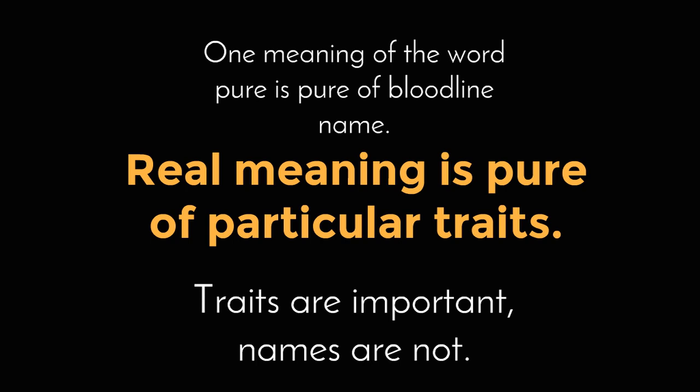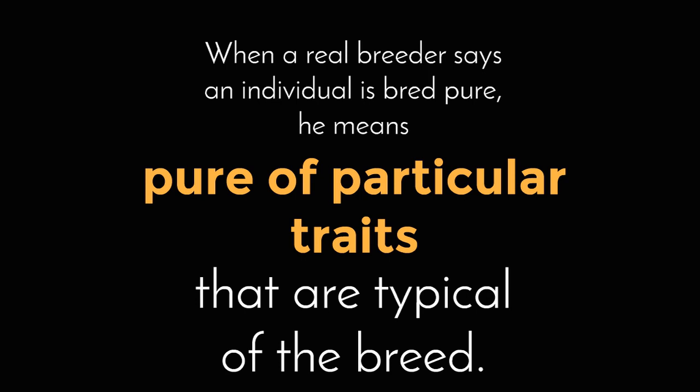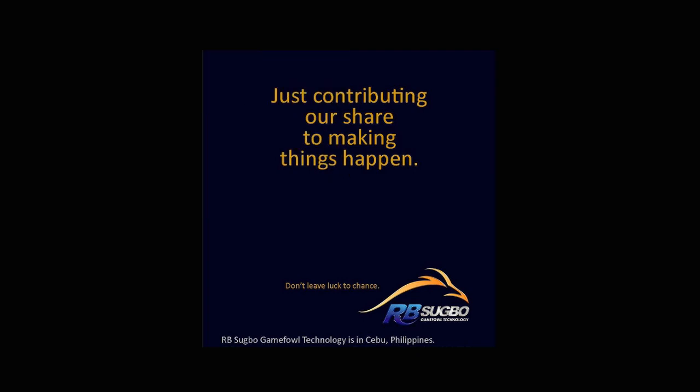In gamefowl breeding, the word 'pure' is often used to describe purity of bloodline, such as pure Possum Sweater or pure Sanford Yellow-Legged Hatch. One meaning of pure is pure of a bloodline. But there is another and better meaning of the word pure: pure of a trait or characteristic. In reality, being pure of a name is nothing. In true breeding, being pure of the good traits is everything. When a real breeder says that an individual is bred pure, it means it is pure of particular traits that are typical of the breed. This is the kind of purity that makes the substance or genetic composition of the gamefowl desirable. In breeding and genetics, there is definitely pure — pure of particular traits.